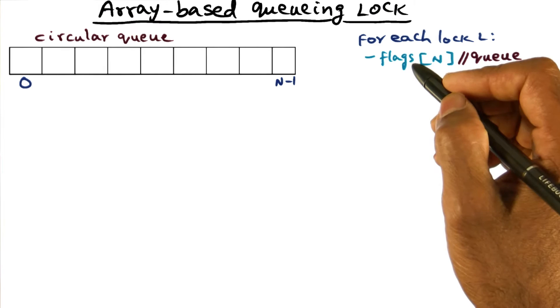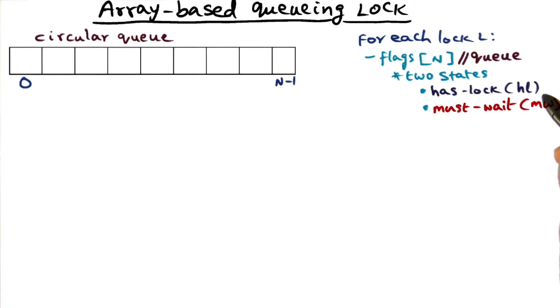Each element in this flags array can be in one of two states. One state is the hasLock state, and the other state is the must-wait state.